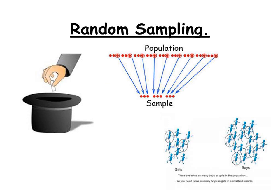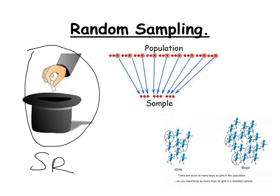There are three different probability techniques. The first one is simple random sampling, sometimes known as SRS. Simple random sampling generally just involves selecting a number of people from the sample at random — it can be done by a computer, or by drawing names out of a hat.